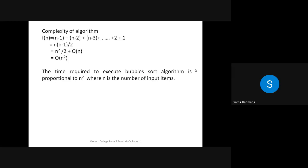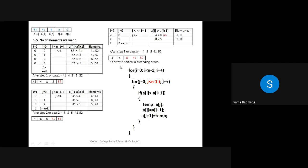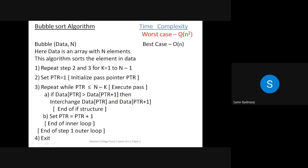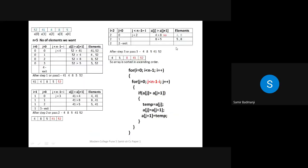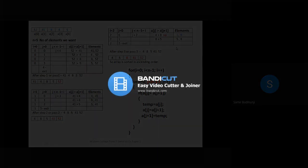Now let's see why the time complexity is O(n²). The number of comparisons is n minus 1, plus n minus 2, up to 1, which gives n(n-1)/2, which is O(n²). This type of question is often asked in fill-in-the-blanks: 'What is the time complexity of bubble sort algorithm?' Just write O(n²). Don't write the best case O(n). Always write the worst case for bubble sort.